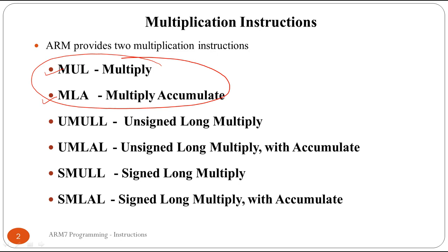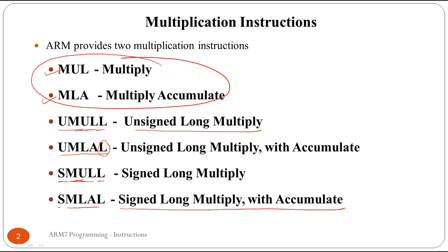MLA stands for multiply accumulate. Extensions of these two instructions are the unsigned and signed long variants. These are: UMULL - unsigned multiply long, UMLAL - unsigned multiply and accumulate long (U for unsigned, MLA for multiply and accumulate, L for long), SMULL - signed multiply long, and SMLAL - signed multiply and accumulate long. We are going to study these six instructions in this session.